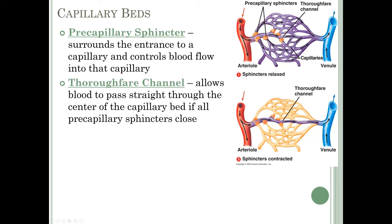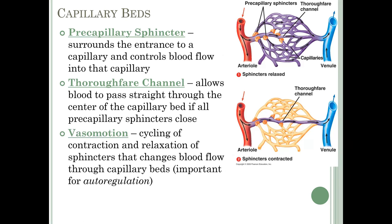A thoroughfare channel is the middle central channel allowing blood to pass straight through the center of a capillary bed when all precapillary sphincters are closed. Vasomotion is the cycling of contraction and relaxation of these sphincters, which changes blood flow through capillary beds. This is important for autoregulation. For example, during thermoregulation, blood flow is reduced to the skin — why your hands get cold when you're cold — as your body keeps more blood in the trunk where vital organs are.